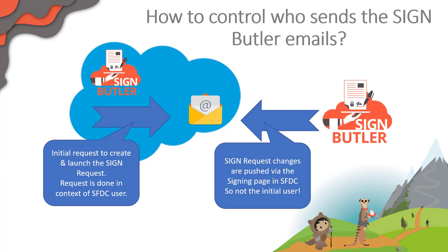Hi. In Signbuttler, all mails are sent via Salesforce, which has some limitations on how to control who can actually send the emails. It's very important to realize that when sending emails there are multiple steps in the process. The initial mail that is sent when a user clicks the button to send out the sign request is easy, because this is directly done in the context of the Salesforce user.